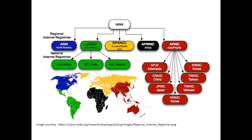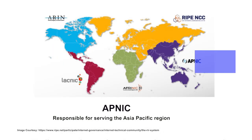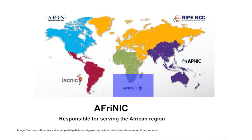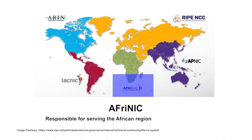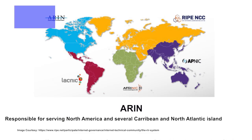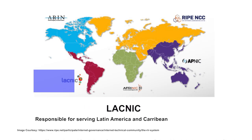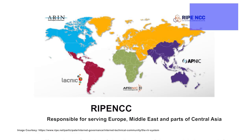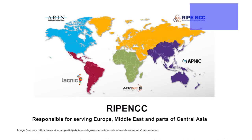IANA decentralizes the task of assigning IP addresses by allocating large chunks of IP addresses to five Regional Internet Registries, which are further responsible for allocating IP addresses in their zones. These RIRs are APNIC, AFRINIC, ARIN, LACNIC, and RIPE NCC. APNIC is responsible for serving the Asia Pacific region. AFRINIC is responsible for serving the African region. ARIN is responsible for serving North America and several Caribbean and North Atlantic islands. LACNIC is responsible for serving Latin America and the Caribbean, and RIPE NCC is responsible for serving Europe, the Middle East, and parts of Central Asia.